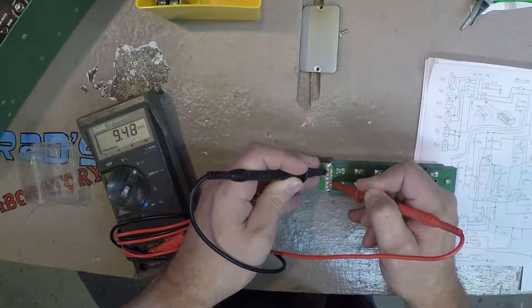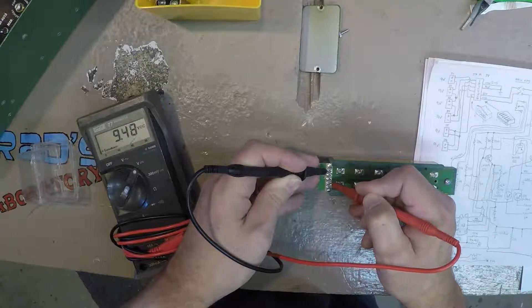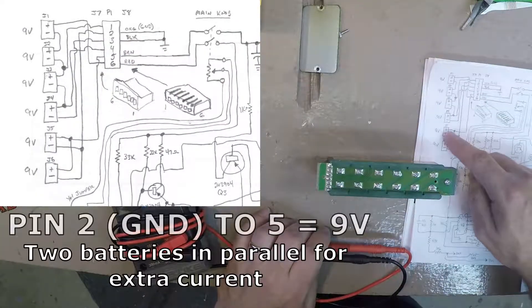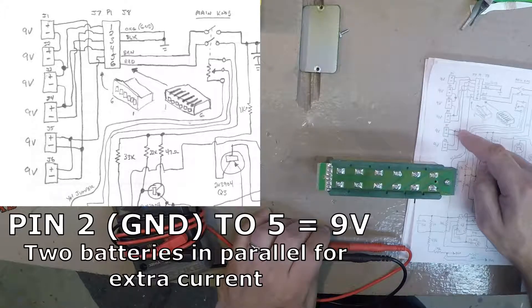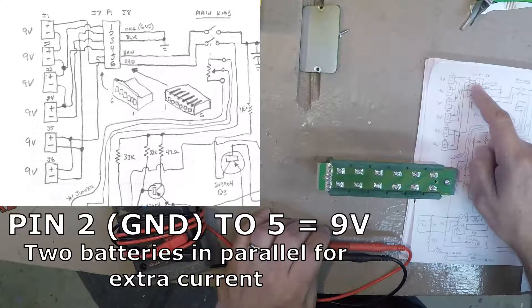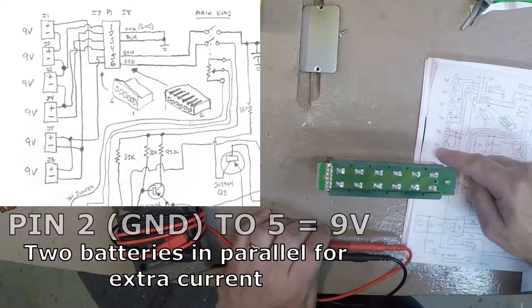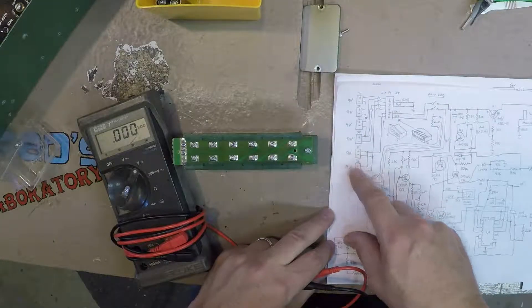Looks like there's just 9 volts across 2 and 5. Yeah, so those two are in parallel. That makes sense. So pin 2 and pin 5 are these two parallel 9-volters.